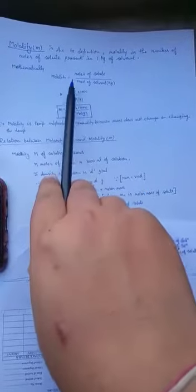Mathematically, molality can be written as moles of solute upon mass of solvent in kg. If the mass of solvent is used in grams, then we can multiply by 1000.